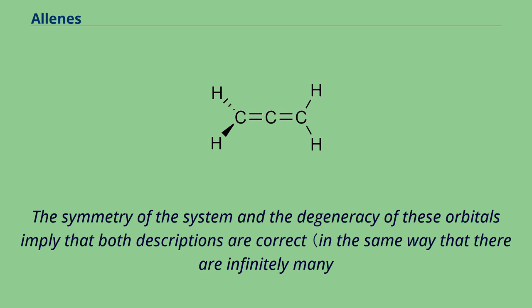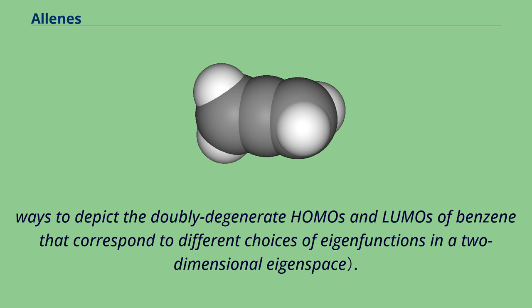The symmetry of the system and the degeneracy of these orbitals imply that both descriptions are correct, in the same way that there are infinitely many ways to depict the doubly degenerate HOMOs and LUMOs of benzene that correspond to different choices of eigenfunctions in a two-dimensional eigenspace.